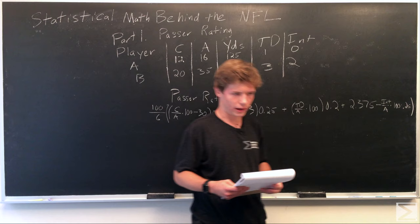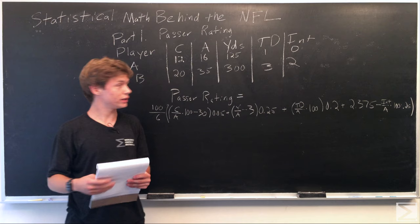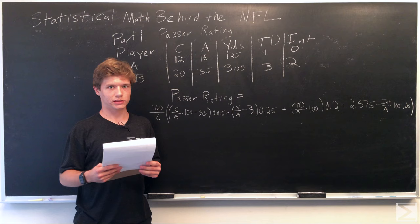After we do all that, we divide everything by 6 and multiply it by 100. Now we'll look at these two players, plug in some numbers, and figure out which one ends up coming out on top.